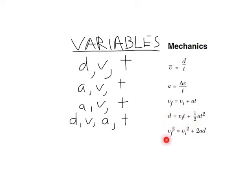The final formula has V, A, and D. This is the only formula of all five that doesn't have time in it. So if time is not given and not asked for, this is your formula. And the formula with all four variables is the only one that includes D, V, A, and T together.